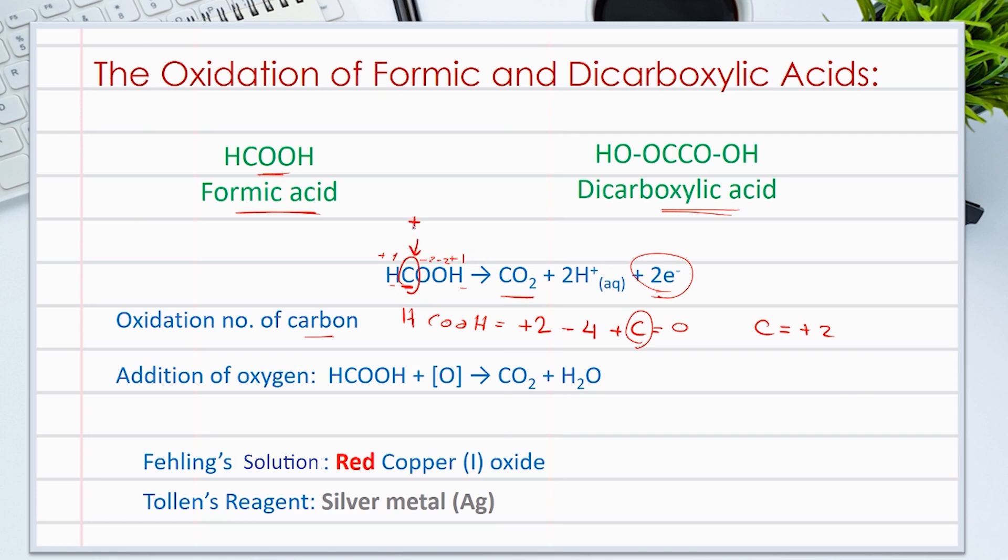Now, let's calculate the oxidation number of carbon in carbon dioxide. Two oxygens, minus four. So the carbon has plus four oxidation number. This gives us that the carbon is oxidized from plus two to plus four. It loses two electrons during the oxidation reaction.